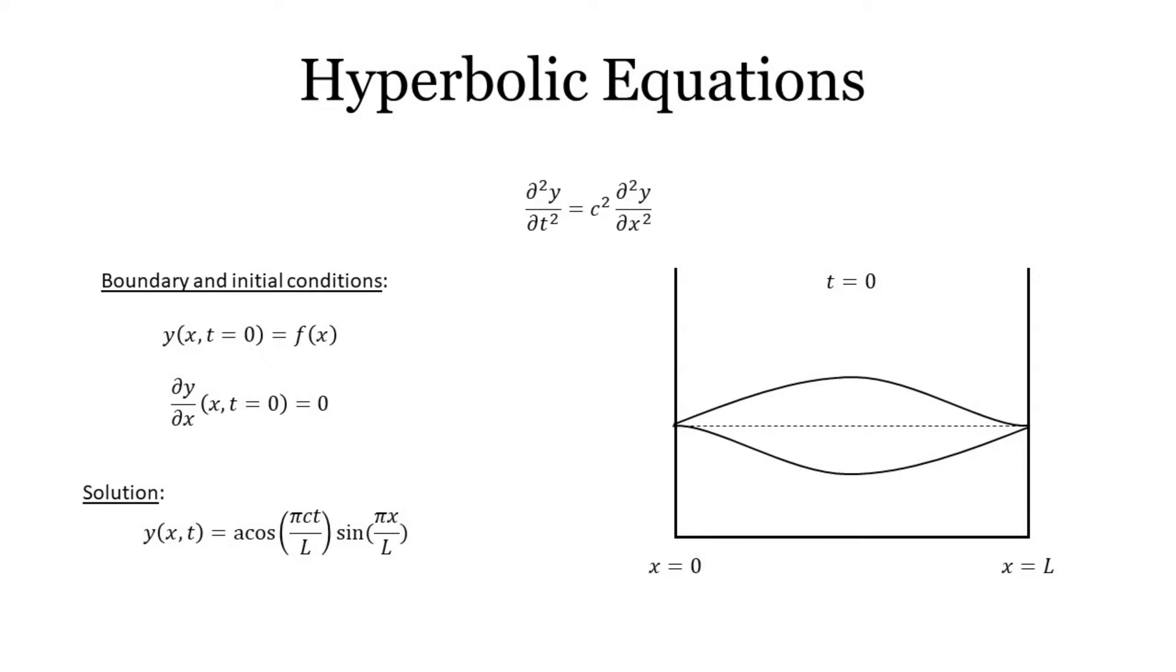Imagine the string was plucked in such a way that it resembled a triangle. The peak of this triangle constitutes a discontinuity in the solution. More worryingly, this peak can be represented by a combination of a series of sine waves using a Fourier transform.